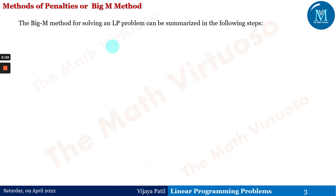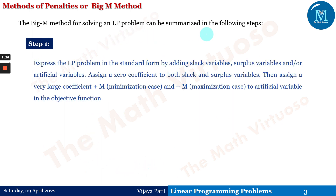The Big M method for solving an LP problem can be summarized in the following steps. Step one: express the LP problem in standard form by adding slack variables, surplus variables, and artificial variables. Assign a zero coefficient to both slack and surplus variables in the objective function. Then assign a very large coefficient — plus M for minimization, minus M for maximization — to the artificial variable in the objective function.